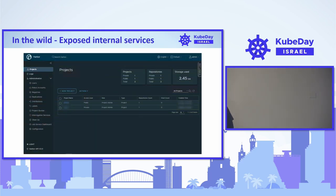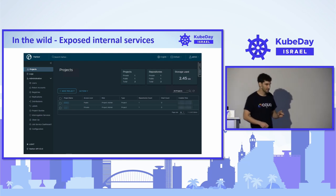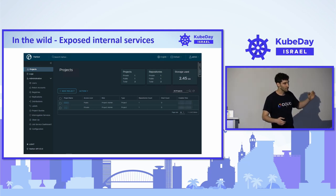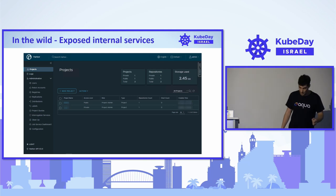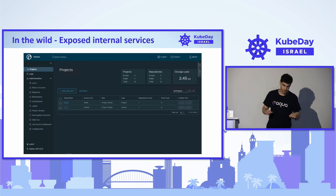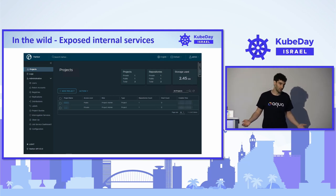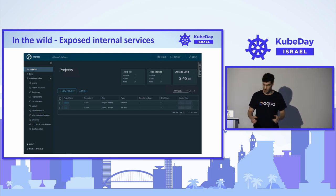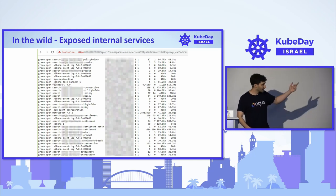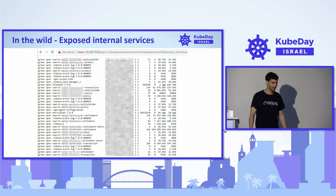Another interesting use case involved the built-in proxy of the Kubernetes API server — not kubectl proxy, but the API server's internal proxy. This proxy let us access internal applications that were not exposed or were behind a firewall. Some applications had no security measures because they were considered internal, and on others we needed credentials — which we found in the secrets. We gained access to Elasticsearch, databases, and more applications.